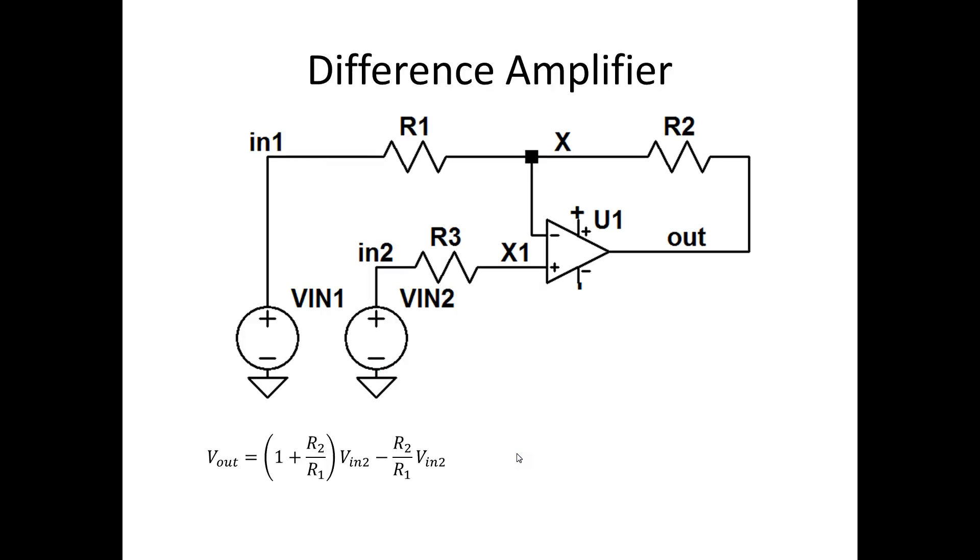Now, sometimes we want to not just add signals or add the inverse signals, we want to subtract one thing from another. And this is certainly one way to do it. And we can see that we have Vin1 is 1 plus R2 over R1 and minus R2 over R1. Now, where did this come from?